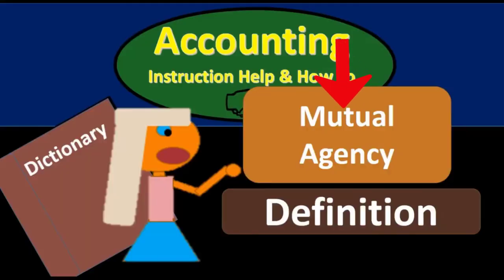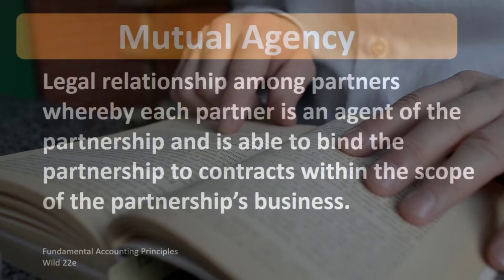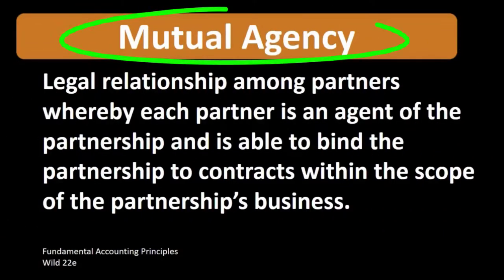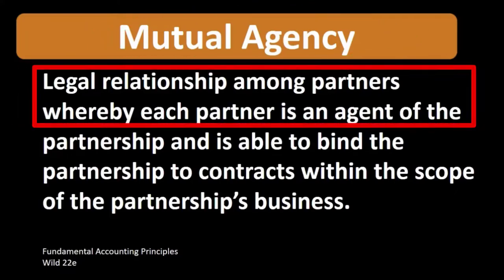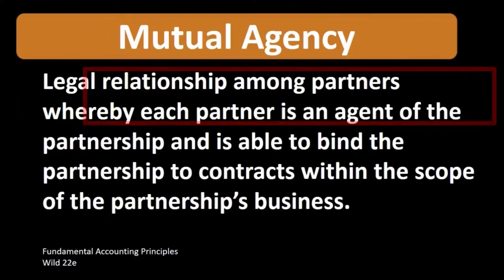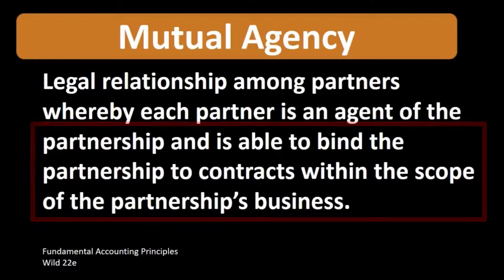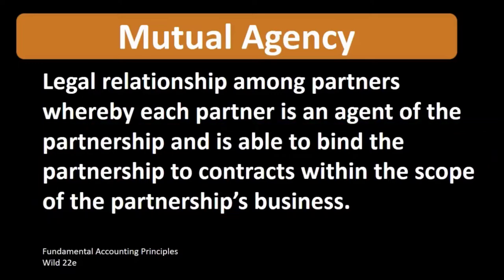In this lecture we will define mutual agency according to fundamental accounting principles, Wild 22nd Edition. The definition of mutual agency is a legal relationship among partners whereby each partner is an agent of the partnership and is able to bind the partnership to contracts within the scope of the partnership's agreement.